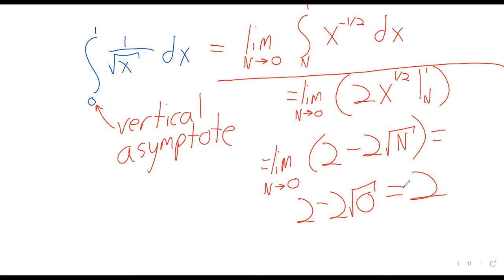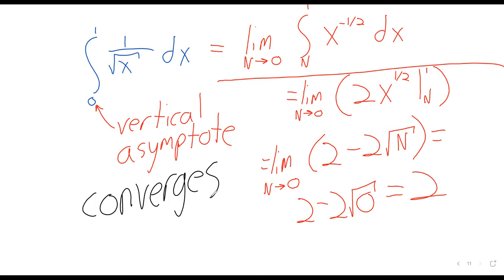So these improper integrals might exist — they might converge, we say. Or they might not exist — they might diverge. It all depends on the specific integral in question. We're not done with this section, or even particularly close to being done, but there won't be time to do another example today.